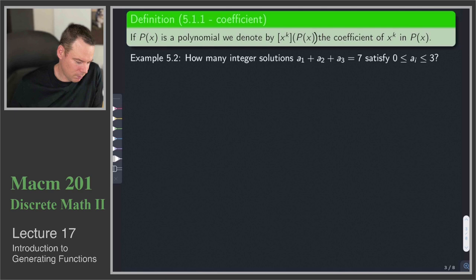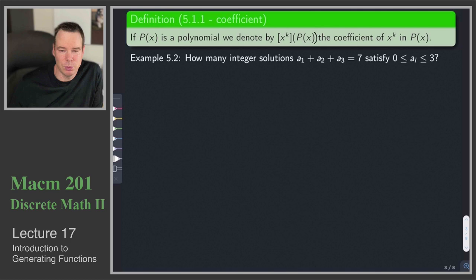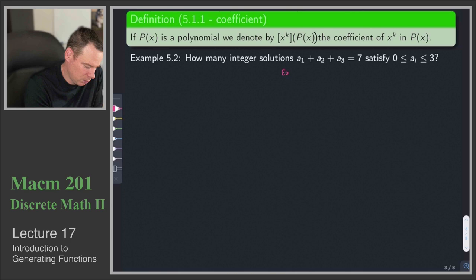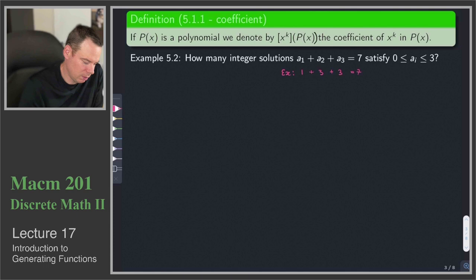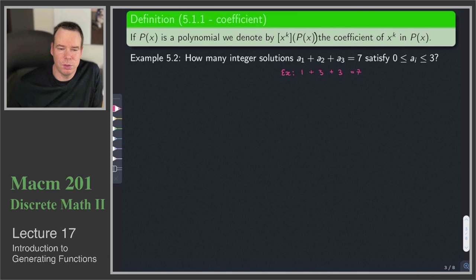Because we're interested in the coefficient of a particular term, we introduce notation: if p is a polynomial, we write [x^k]p(x) to denote the coefficient of x^k in p(x). Now let's see how using algebra and polynomials can help us solve a counting problem: how many integer solutions are there to a1 + a2 + a3 = 7, where each aᵢ is between 0 and 3?